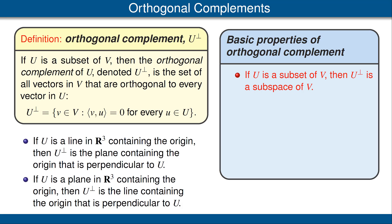Let's look at some simple properties of orthogonal complements. If U is a subset of V, then the orthogonal complement of U is a subspace of V. This is easy to verify from the definitions — be sure that you do it. The orthogonal complement of the set consisting just of 0 is the whole vector space V. Again, this follows directly from the definitions because any vector's inner product with 0 is equal to 0.